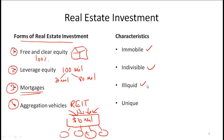Illiquid — this means that in general you cannot quickly sell a real estate investment at market price. So if you've purchased an office building and you want to sell it, chances are that to get market price it might take some time. Hence it would be called illiquid. Most real estate investments tend to be rather unique, because even with houses, no two houses are exactly the same, and no two office complexes will be exactly the same. Hence this makes valuation and analysis somewhat challenging.